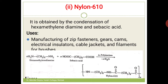The next polyamide is nylon 6-10. As the name suggests, one monomer unit has 6 carbon atoms — the same hexamethylene diamine reaction — but the acid is changed. In nylon 6-6 it was adipic acid with 6 carbon atoms, but here the acid has 10 carbon atoms.